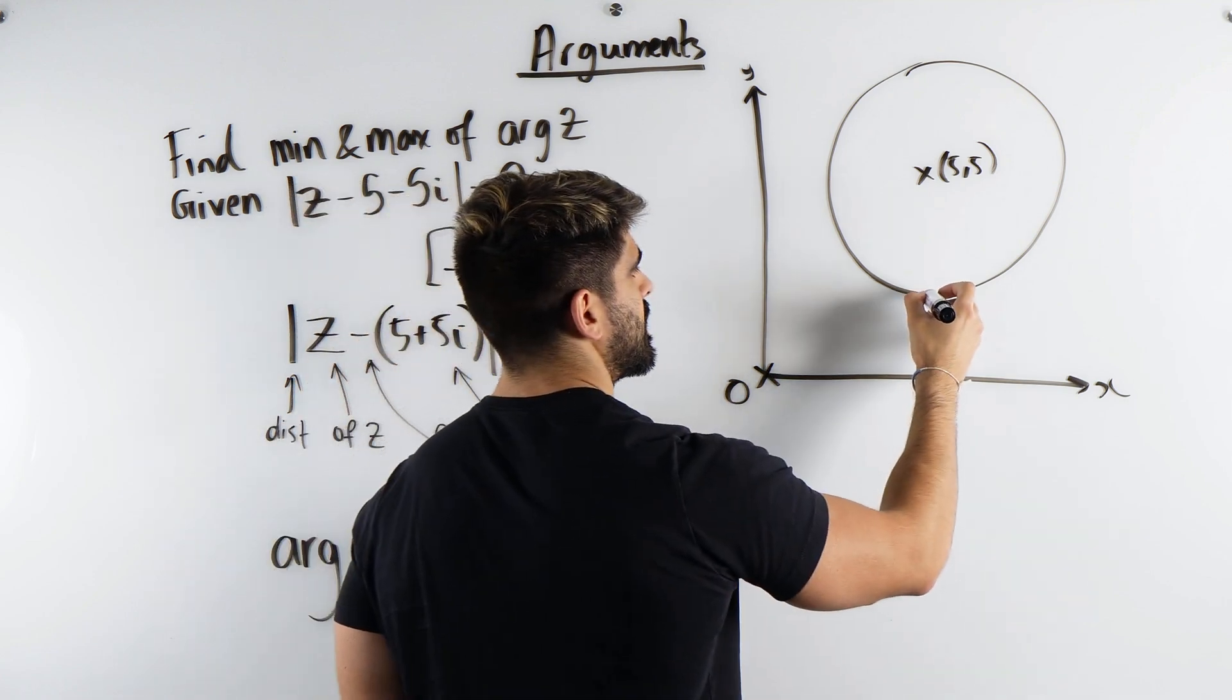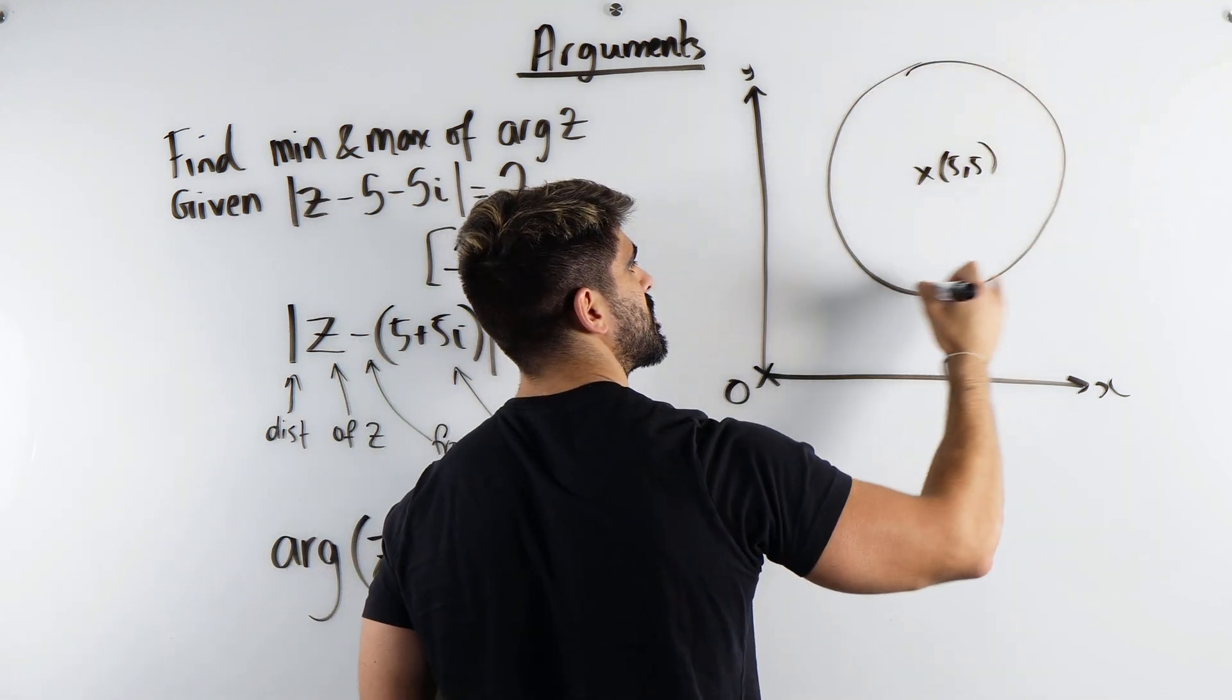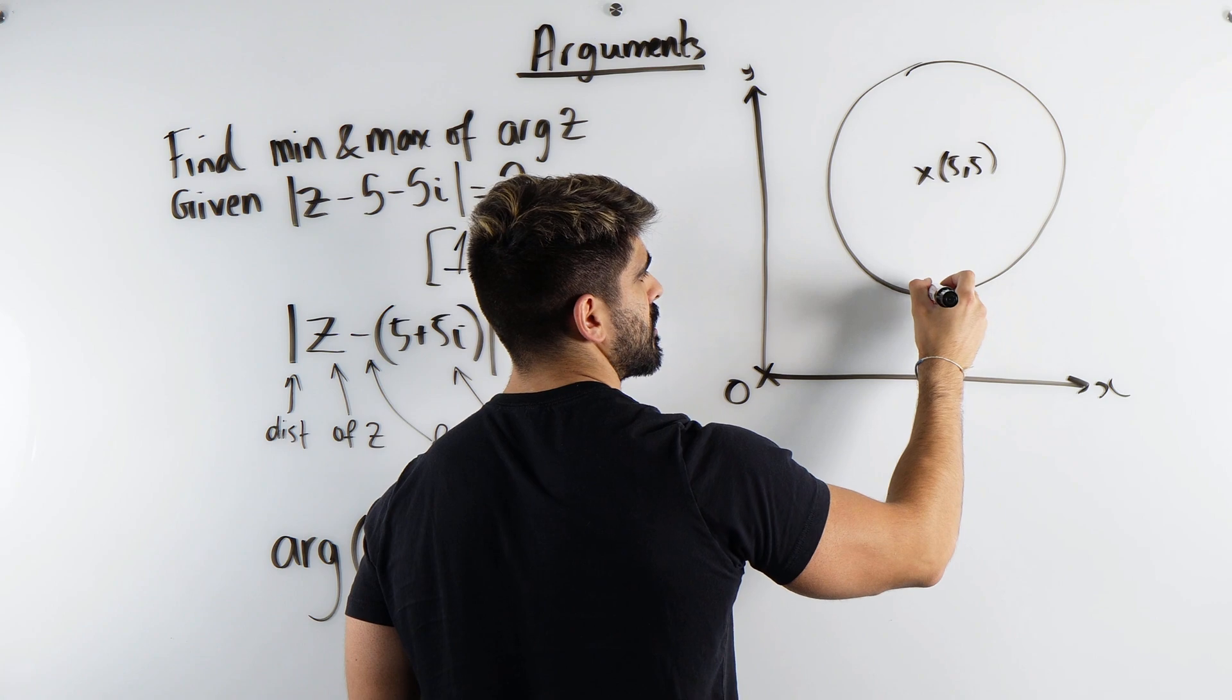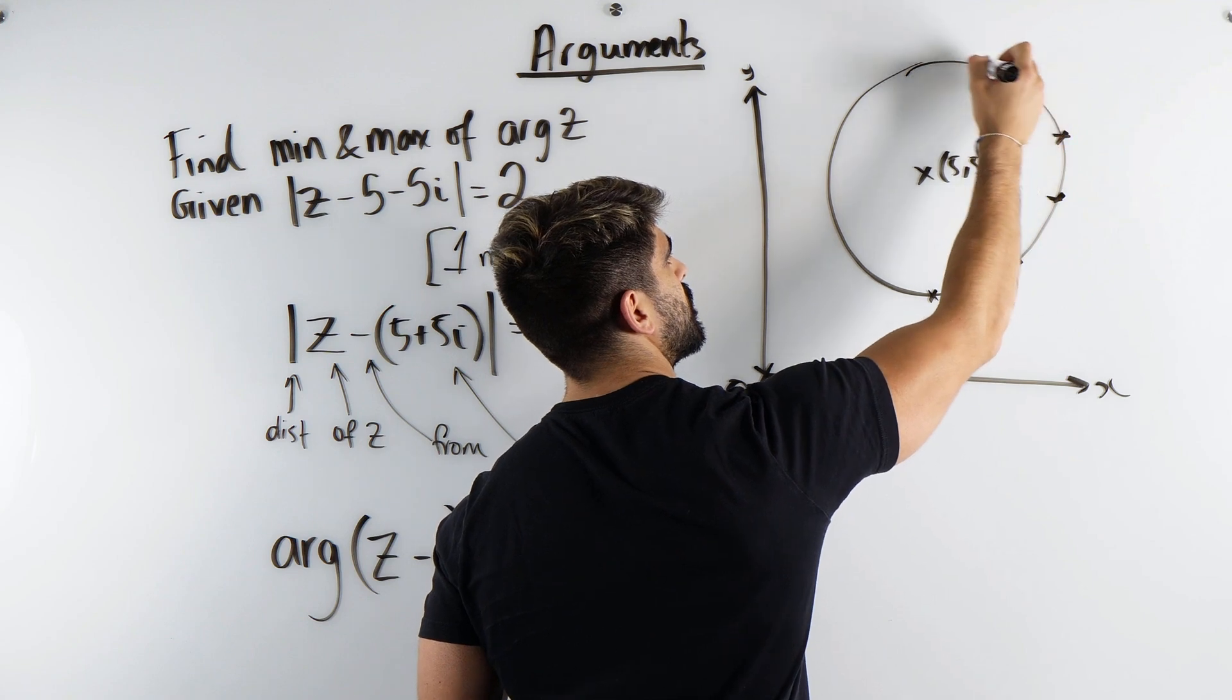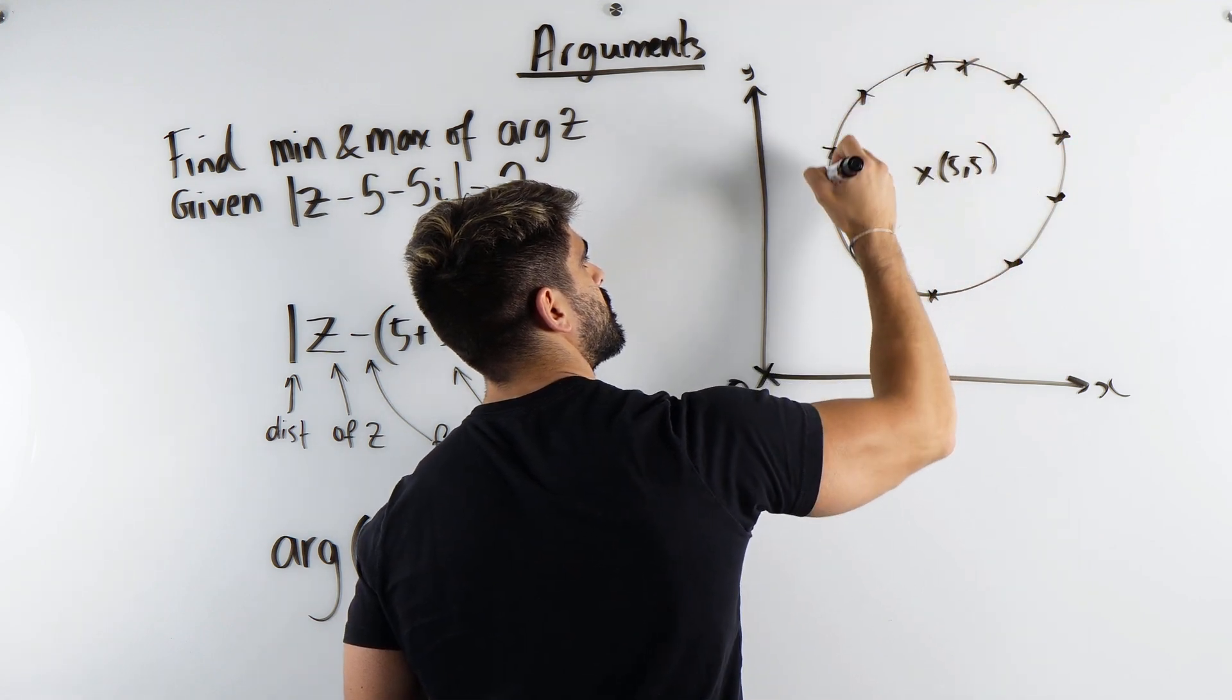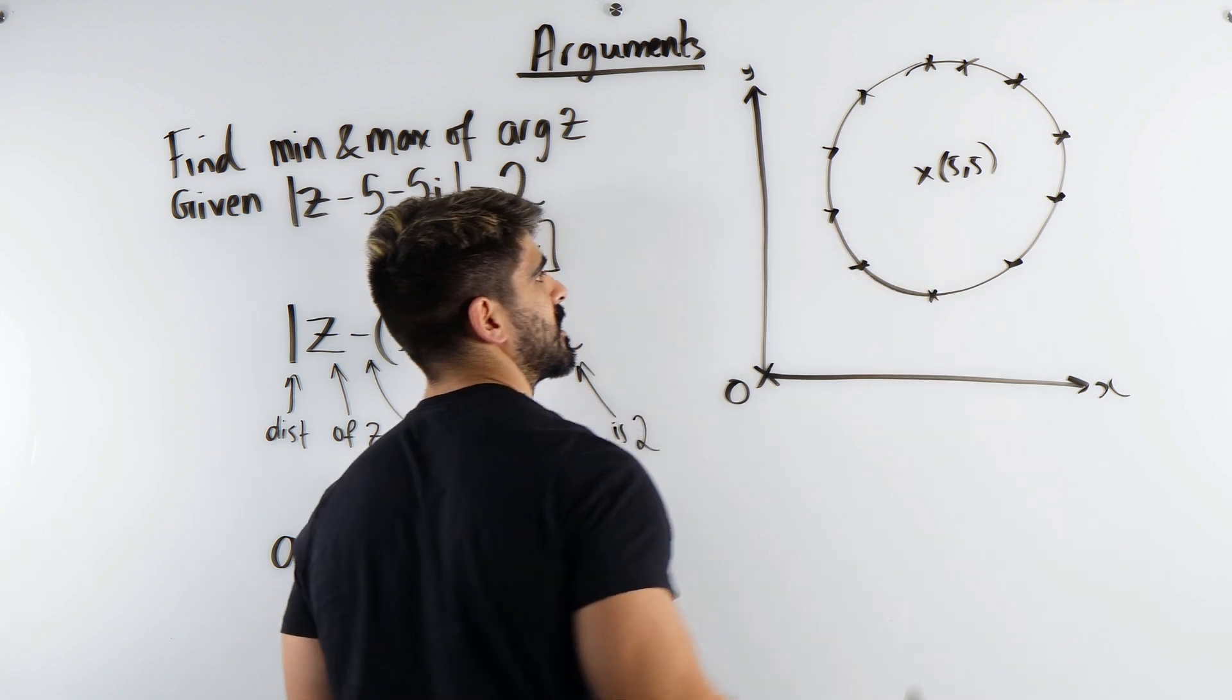Now z can be anywhere on this circle. It could be here, it could be here, here, here. I'll just do a few points just to make a point. It could be anywhere on this circumference.